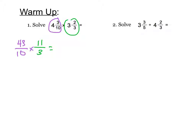Nothing can simplify, so we are going to multiply straight across. 43 times 11 is 473 over 30 and we are going to leave it like that.